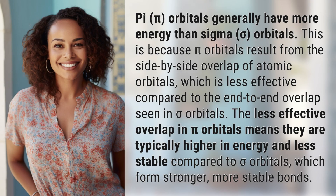Pi orbitals generally have more energy than sigma orbitals. This is because pi orbitals result from the side-by-side overlap of atomic orbitals, which is less effective compared to the end-to-end overlap seen in sigma orbitals.